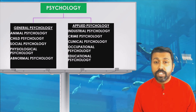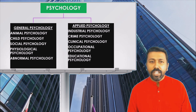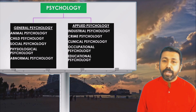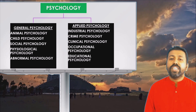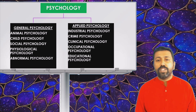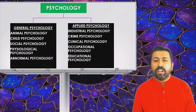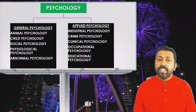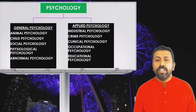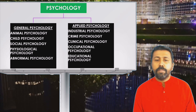In general psychology, it includes animal psychology, child psychology, social psychology, physiological psychology, and abnormal psychology. The applied part of psychology includes industrial psychology, criminal psychology, clinical psychology, occupational psychology, and educational psychology. Those who are writing exams for educational psychology can watch this video up to the end — it will definitely be a blessing for all of you.